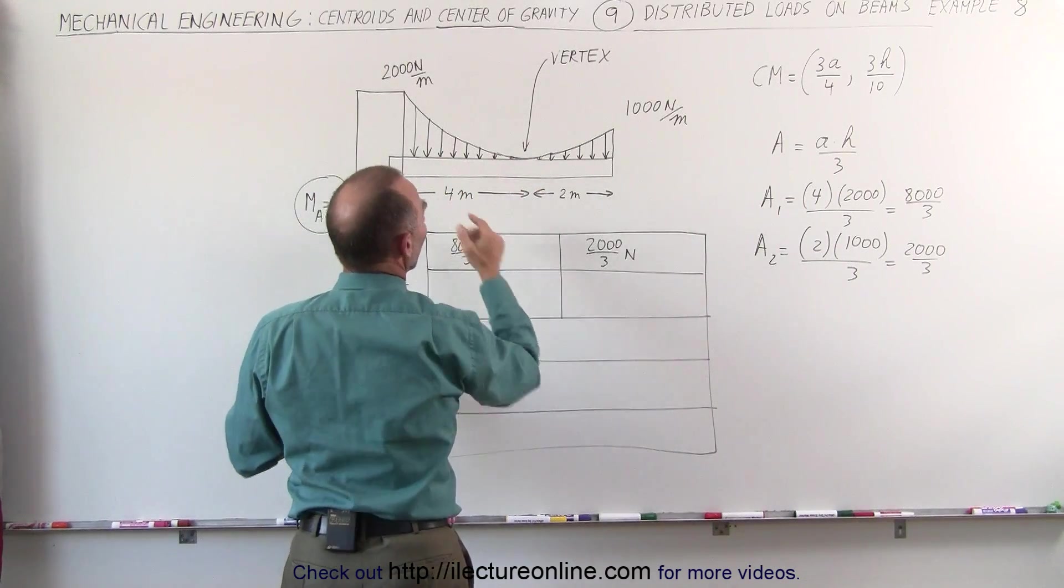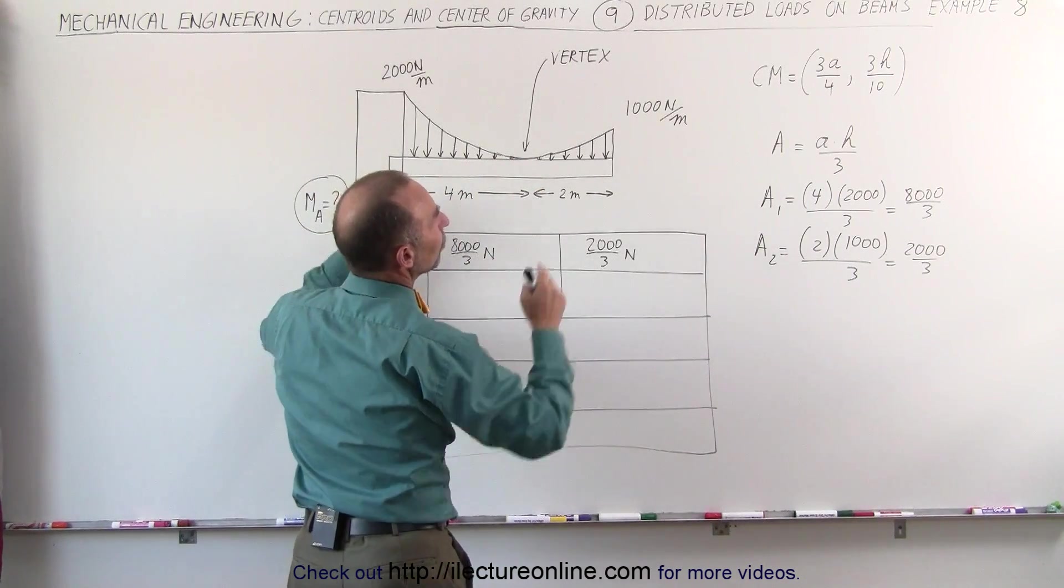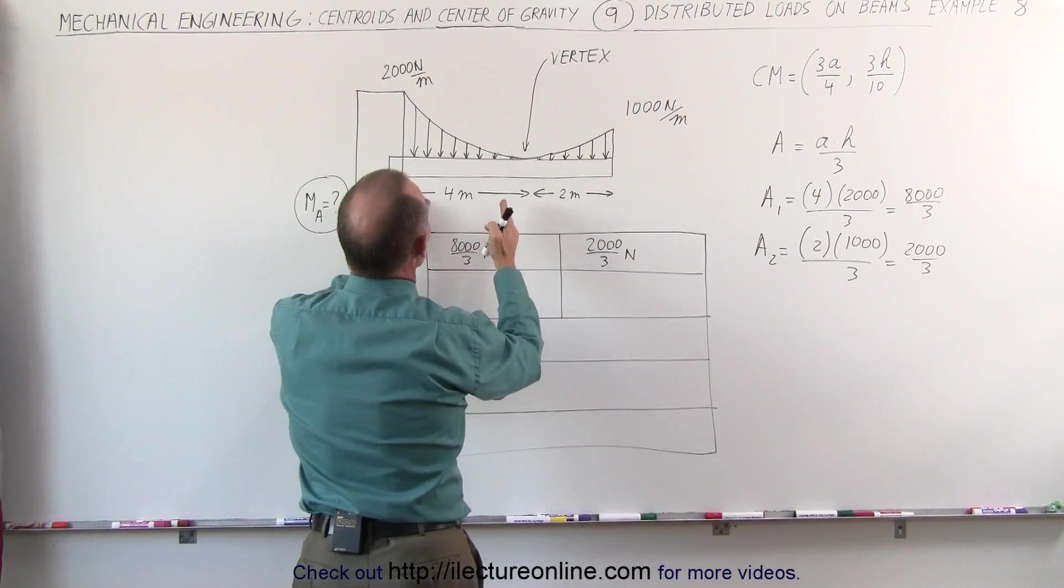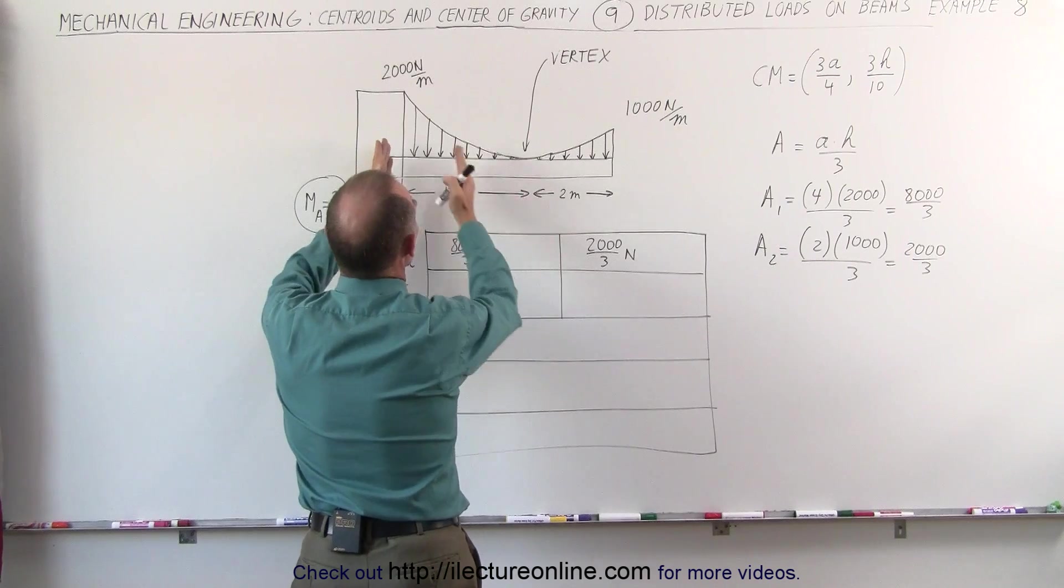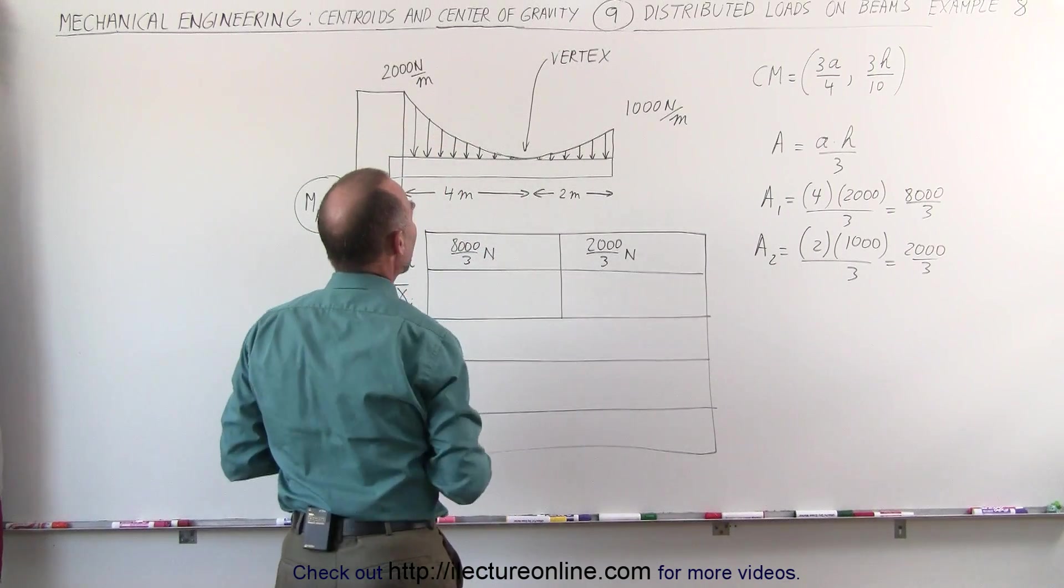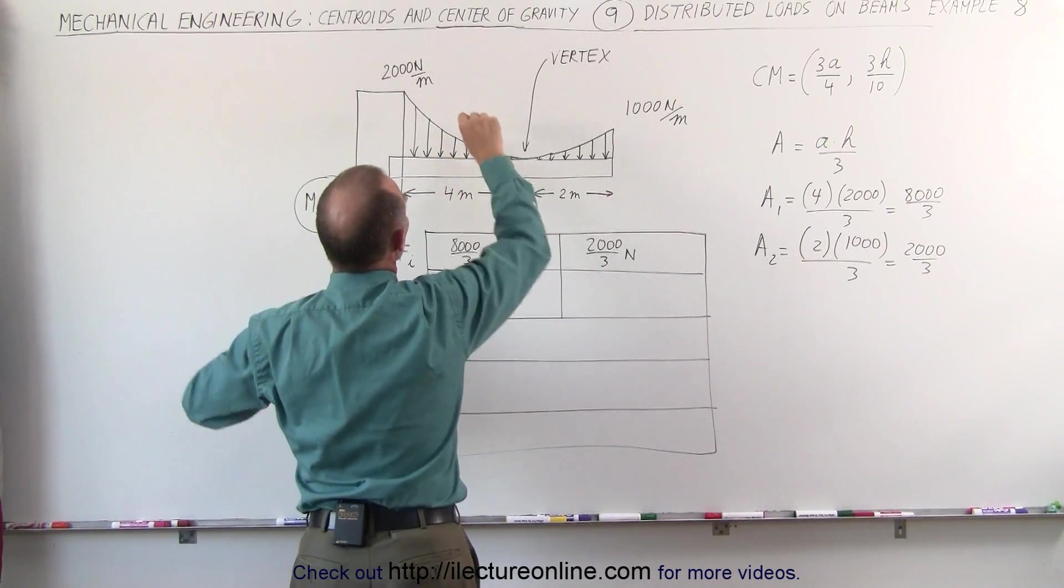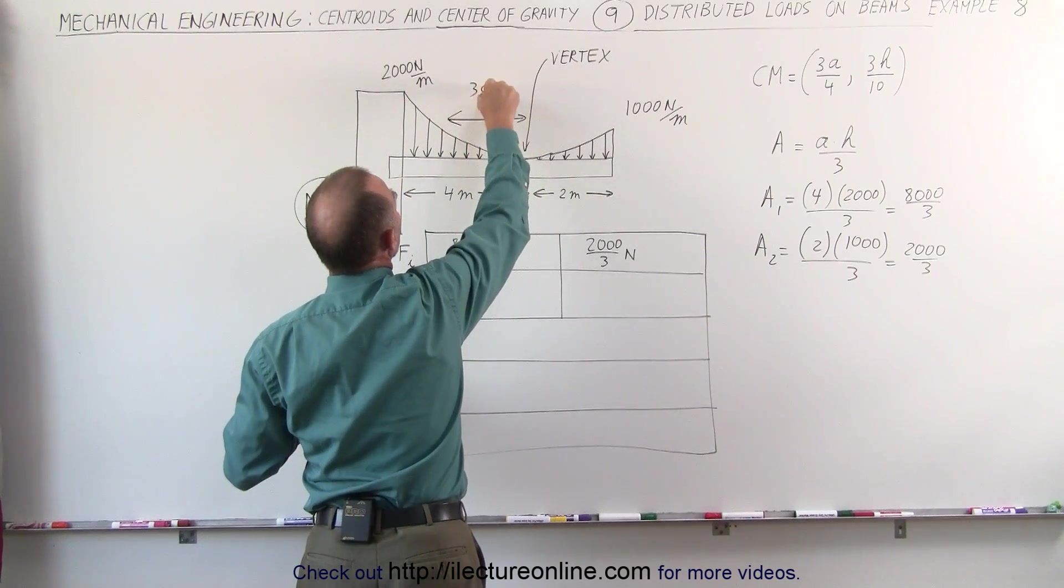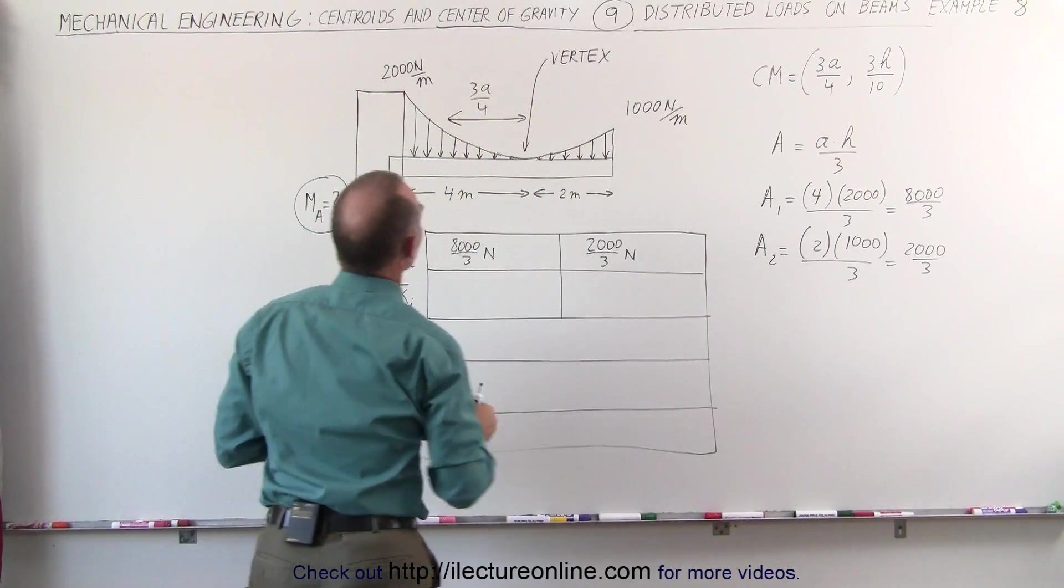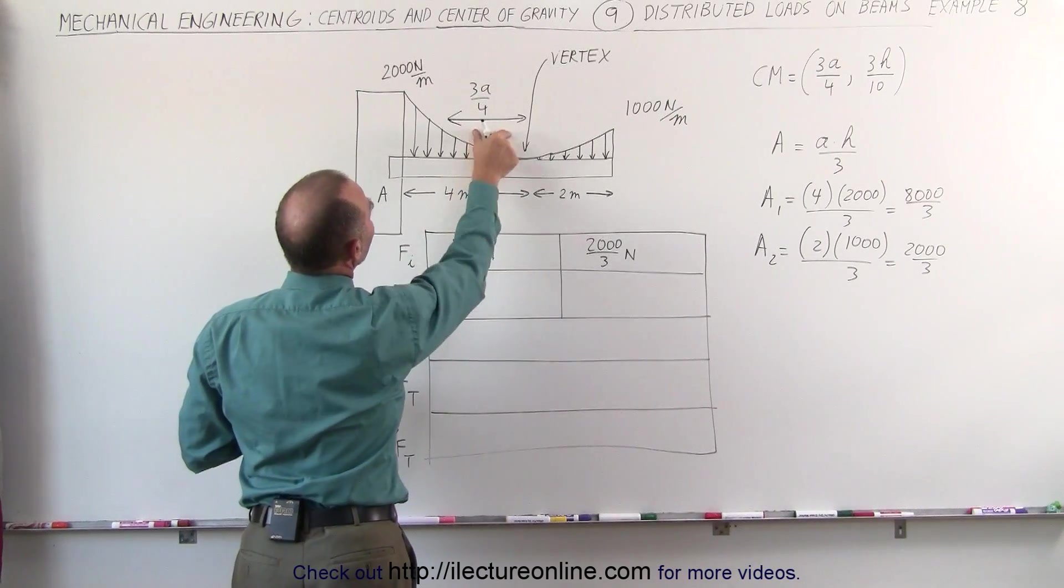From this direction, this way, that would be 3A divided by 4. We need to then subtract that from 4 meters to make sure we get it relative to point A. So what we're going to do is we're going to find the centroid in this direction, that would be 3A divided by 4, and then if we take 4 minus that, we get the particular centroid.